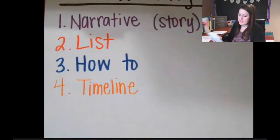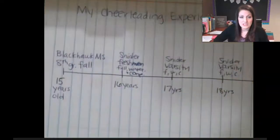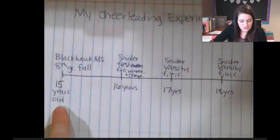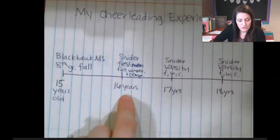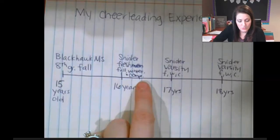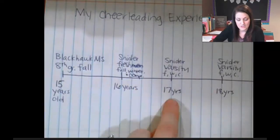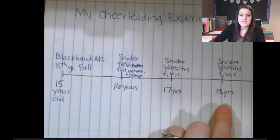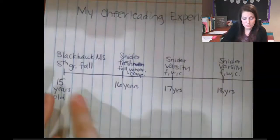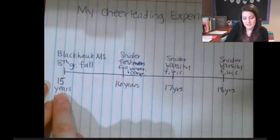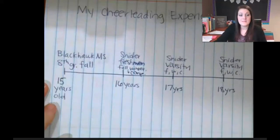Another example of a timeline — I made one for cheerleading. At 15 years old, I was cheerleading at Blackhawk Middle School in eighth grade. At 16, I was a Snyder freshman fall, winter, and competition cheerleader. At 17, Snyder varsity. See how it still goes in order from youngest to oldest. You can include a timeline if it makes sense to your topic.